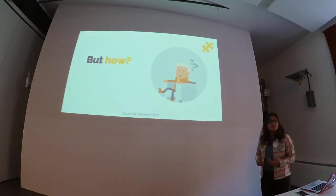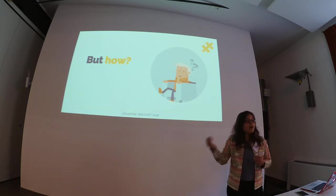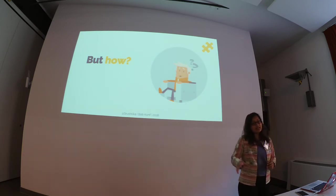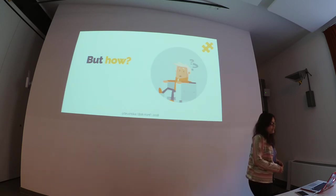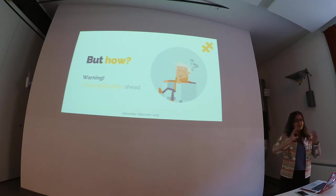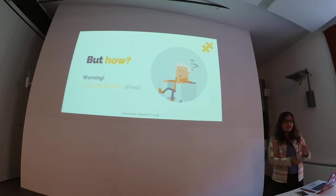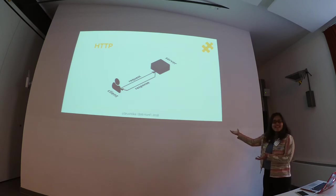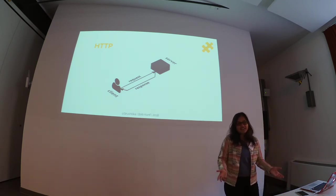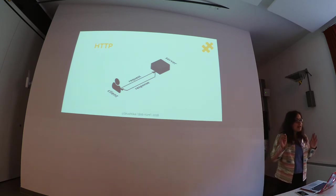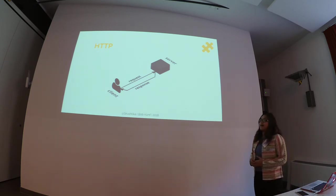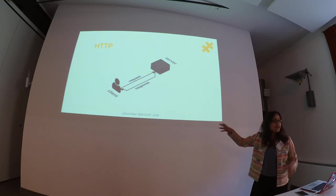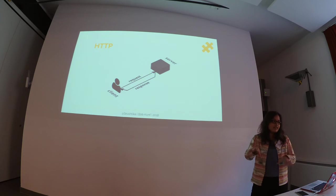But how is this even possible? From what we know of how the internet works, how are these amazing applications built where the time between data being produced and data being consumed is as low as 100 milliseconds? I'm going to oversimplify a few things to preserve context. HTTP — you most definitely know what HTTP is — it's the most basic protocol for how data is transferred over the internet. The Hypertext Transfer Protocol: you have a client and a server, and you ask the server for a resource or service it provides. Going back to the Uber example, I would say: hey server, can you give me the location of the car right now where the driver currently is? And the server, depending on whether it has that data or not, will give me back the data.